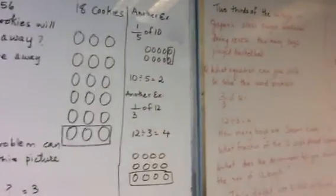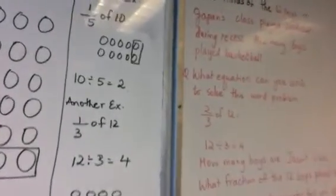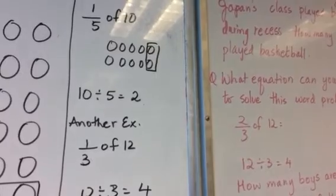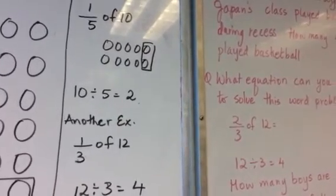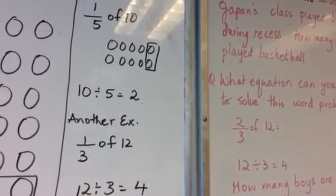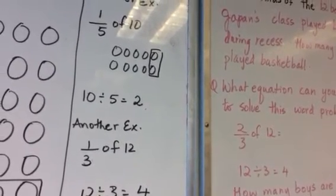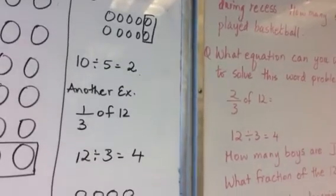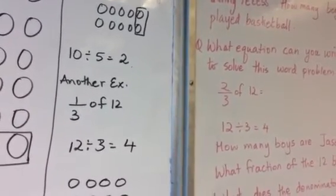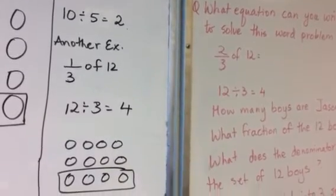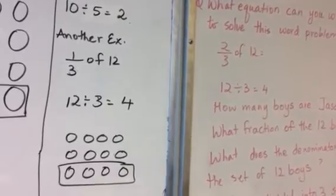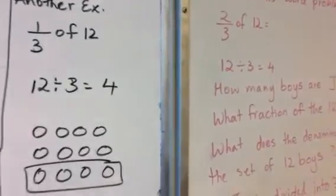Look at another example. 1 fifth of 10. So you make 10 circles of 10, and then you have 10 divided by 5. Inside it, it's 2. So you are dividing 10 by the denominator. Another example, 1 third of 12. 12 divided by 3 equals 4. So here it is 12. Make it in a matrix form, and then you will see 4.